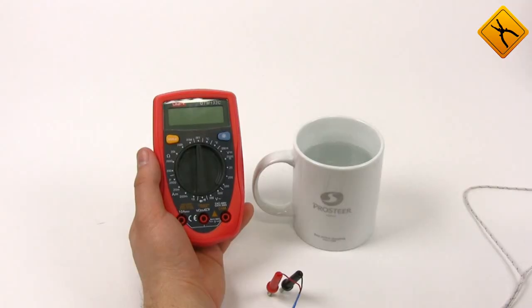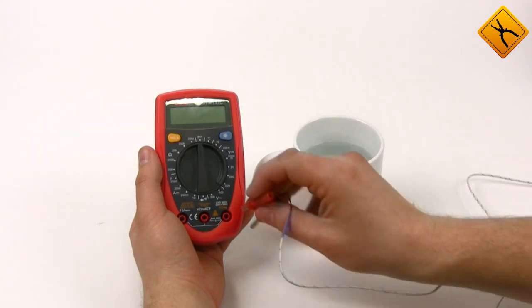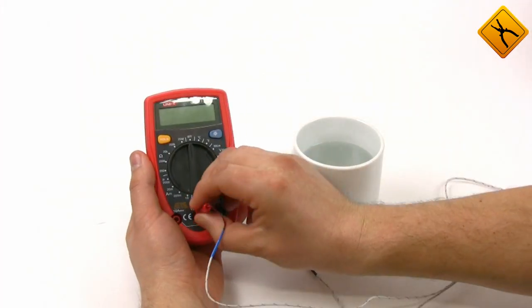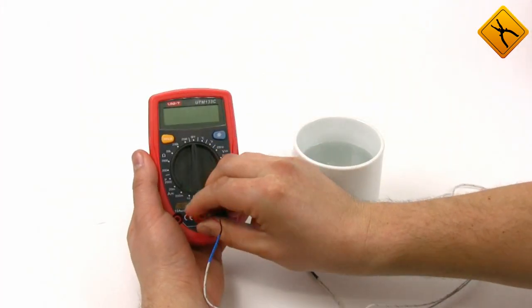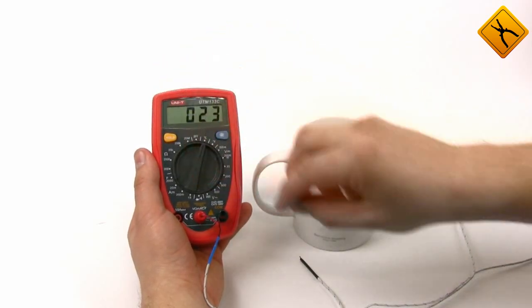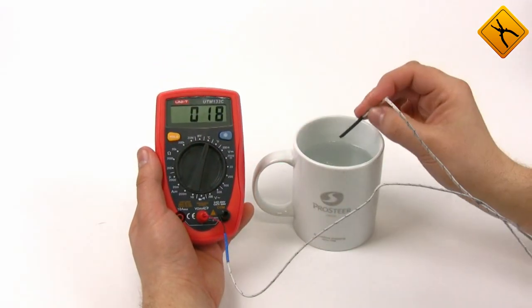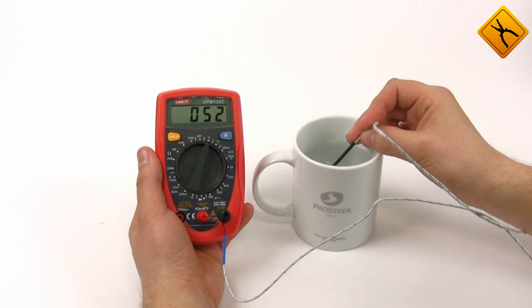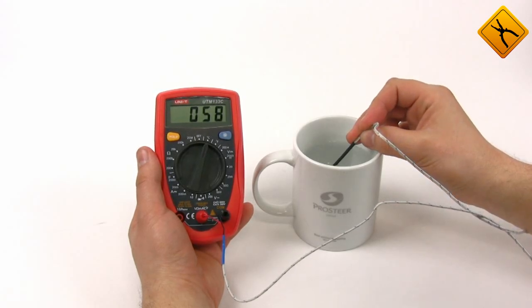Let's demonstrate the temperature measurements. We connect the temperature probe and turn the rotor switch to temperature measurement in degrees Celsius. So we have 58, 59 degrees Celsius.